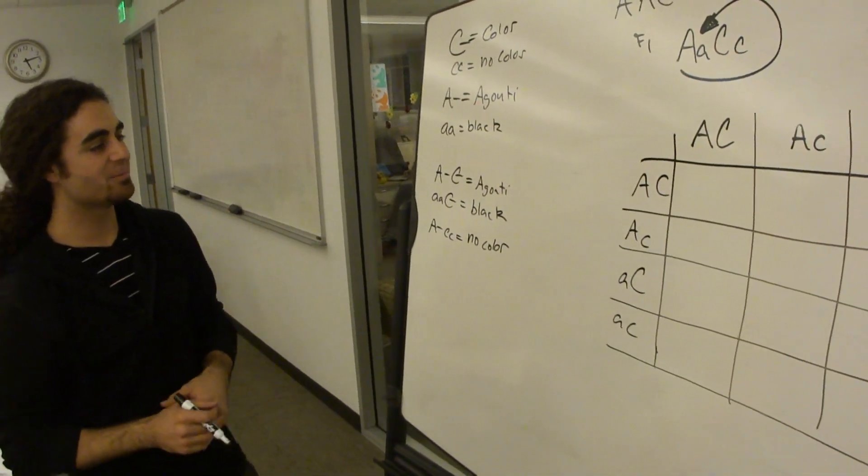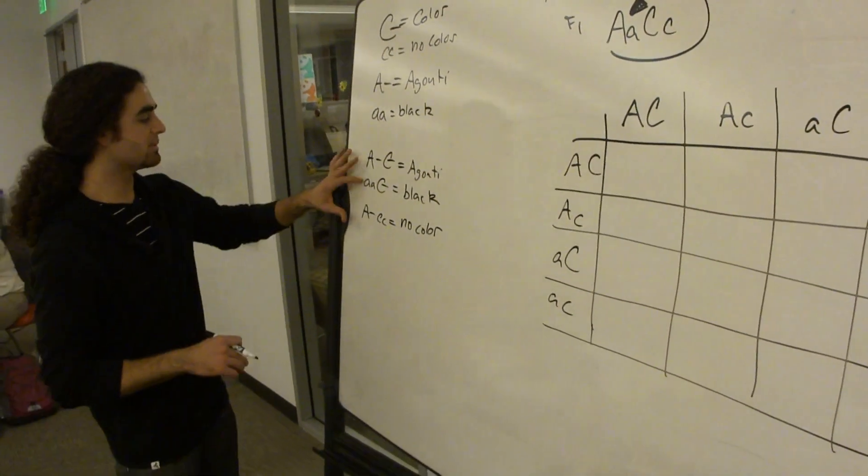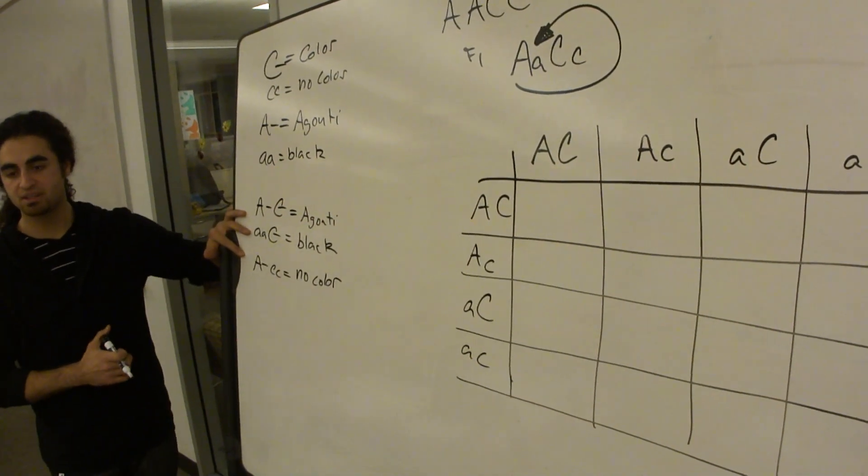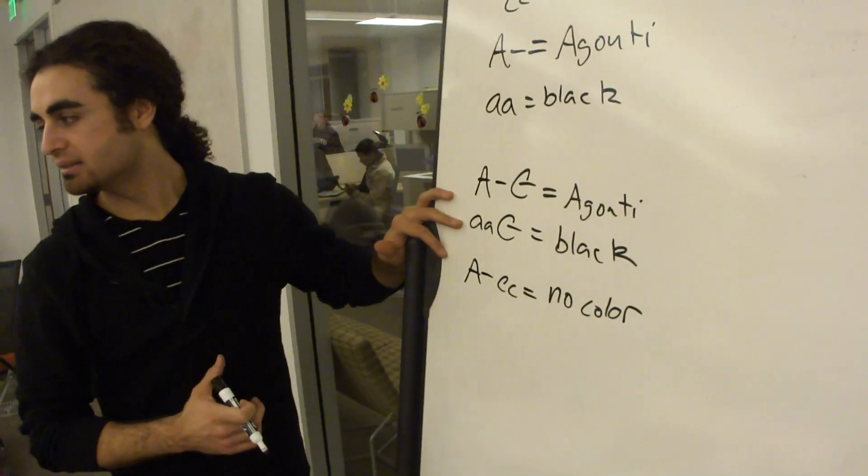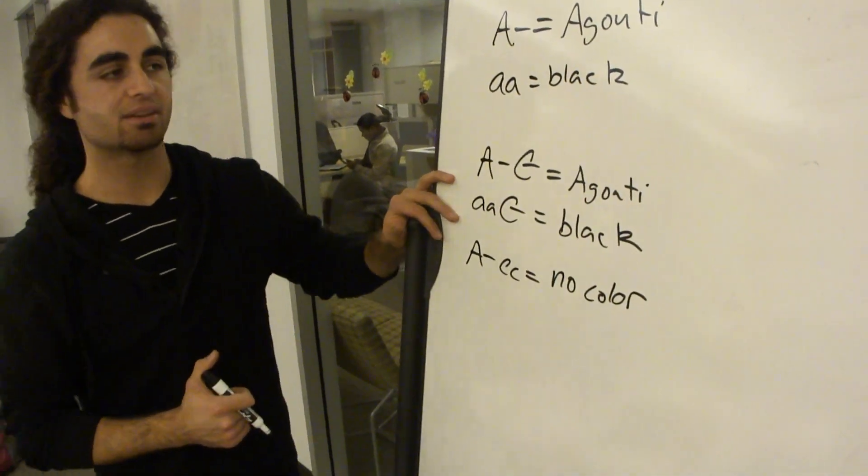We're going to fill in our Punnett square, and then use what we came up with earlier to see what the phenotype of each of the genotypes are.